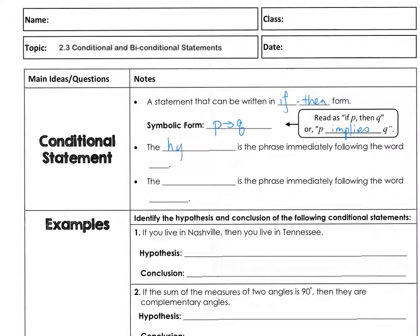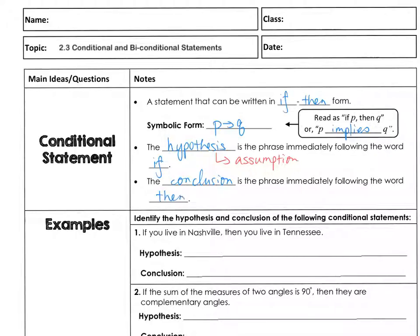The hypothesis is the phrase immediately following the word 'if.' If you have trouble understanding hypothesis, another word is assumption — if I assume something, then something else will happen. And the conclusion is the phrase immediately following the word 'then.' So if I have an assumption, then I have a conclusion.